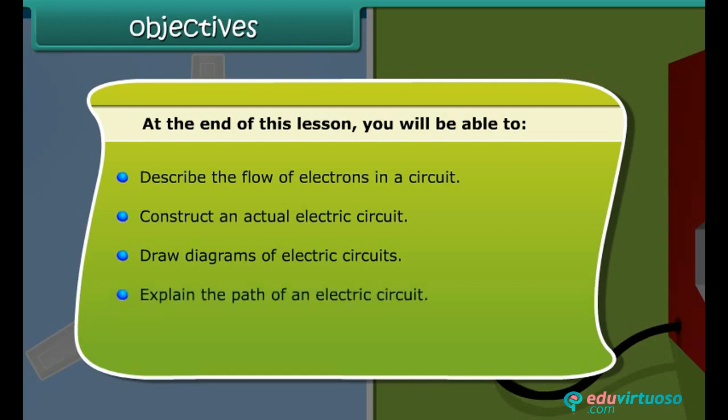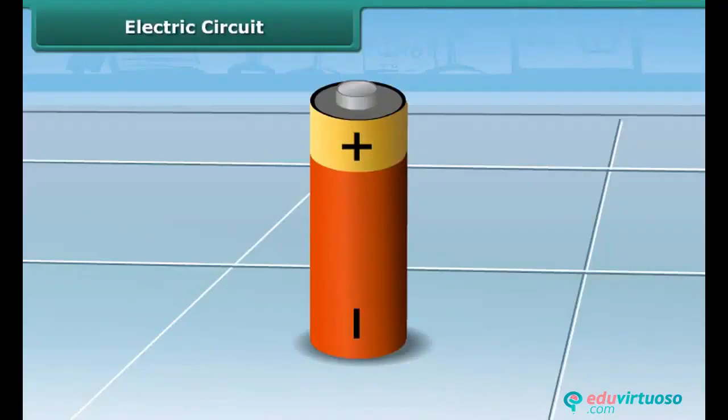An electric cell or a dry cell is the source of electricity for the bulb to glow.